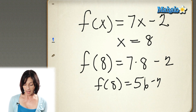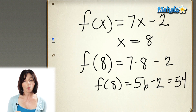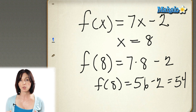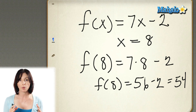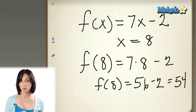56 minus 2 is 54. So f of 8 equals 54. The value of this function when x equals 8 is equal to 54.